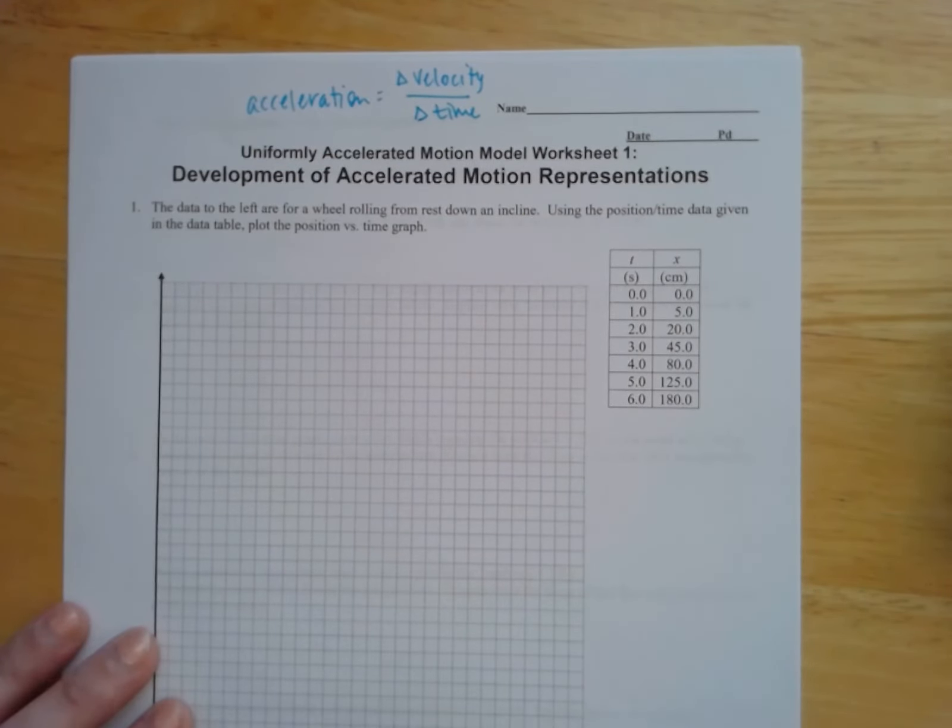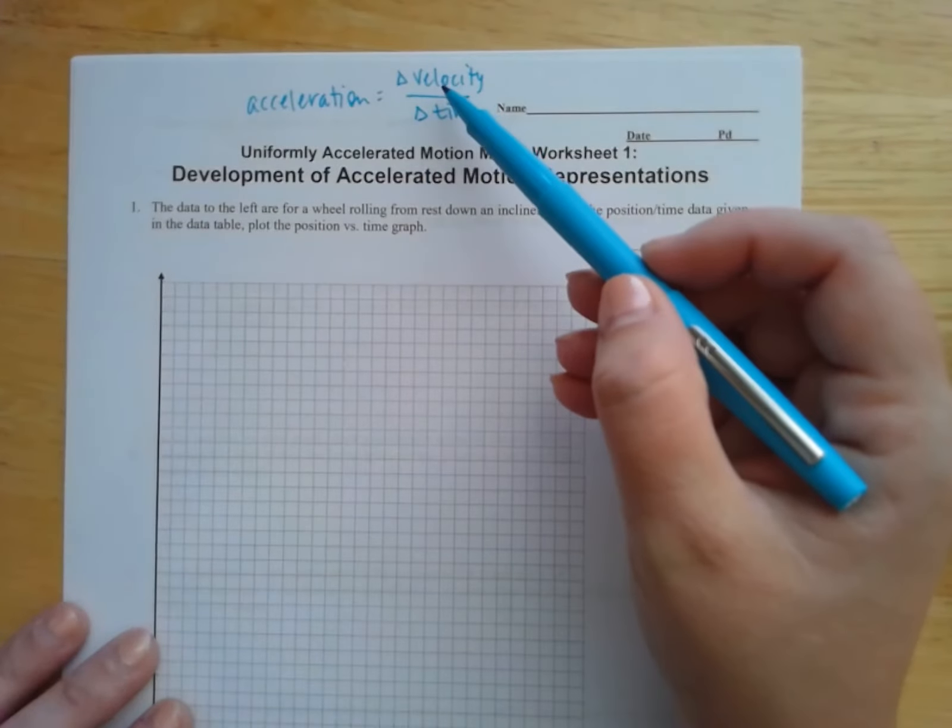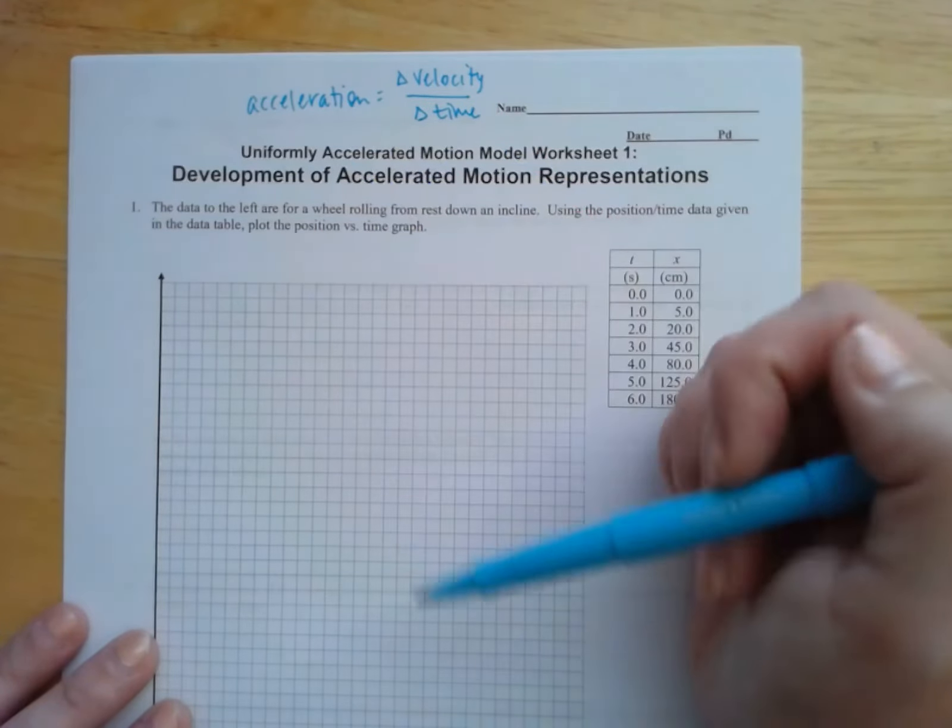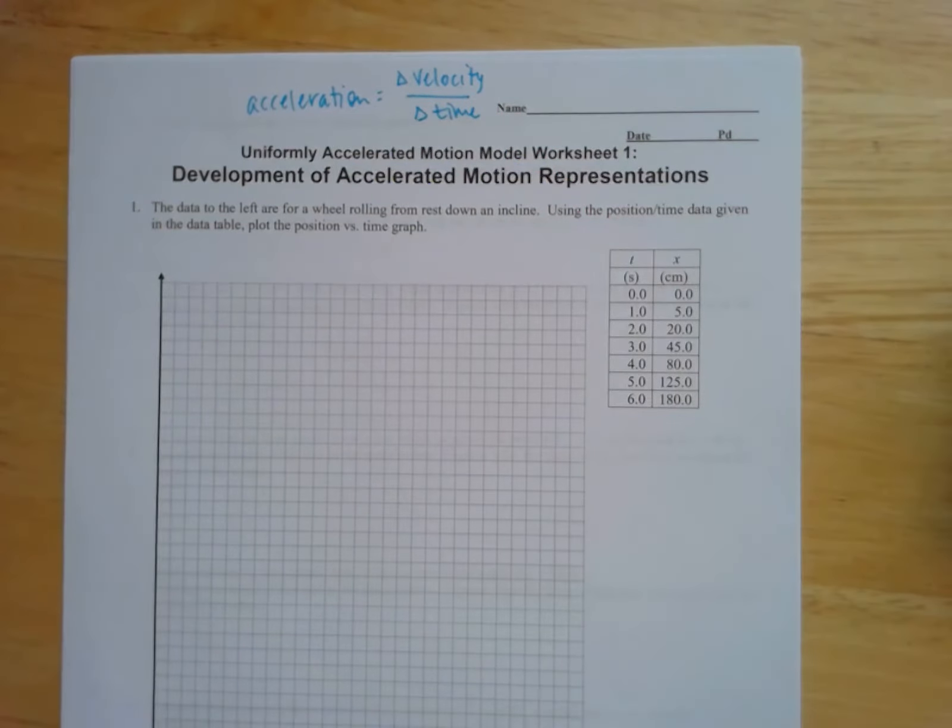In this current unit, unit number three, we're going to see what happens when velocity changes as time goes on. And that's when we have acceleration. So you guys actually saw that in that pivot interactives activity that we just did. But this is going to develop that math a little bit better.